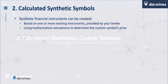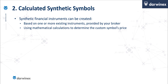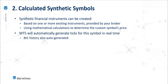For this type of custom symbol, no data import is required at all. Instead, the price data is generated automatically based on one or more existing instruments that are provided by your broker. You can also use mathematical calculations to transform that data before the final quote is calculated. When you create a symbol in this way, the ticks are generated real-time by MetaTrader, so that the chart changes as new quotes come in from those underlying symbols.